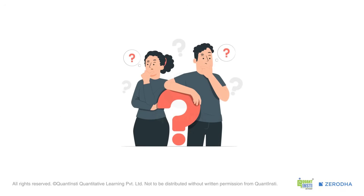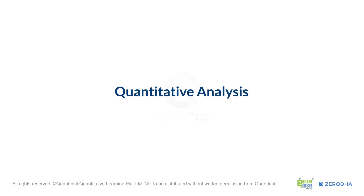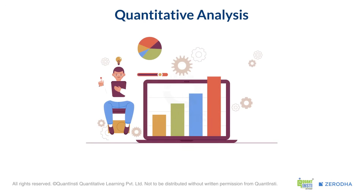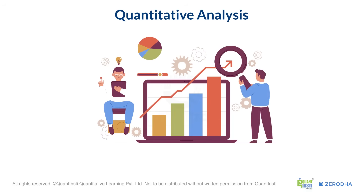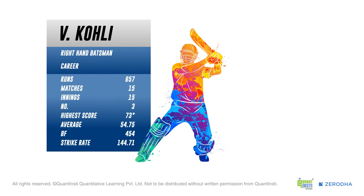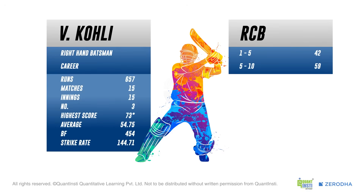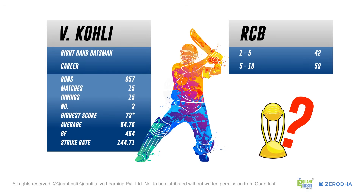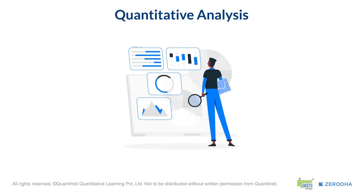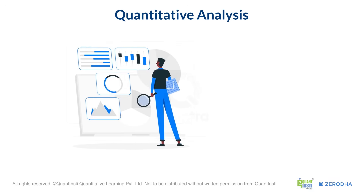But how do we create these strategies? This is where quantitative analysis comes in. It sounds complicated, but the idea is simple — it's about using math and statistics to analyze past market data. Based on our analysis, we predict how the market might move in the future and take trades accordingly. You see it all the time during an IPL match: analysts show Virat Kohli's run rate or how a team scores in the last few overs, using past data to predict who might win. That's data-driven forecasting. Quantitative analysis is the same thing, but for stocks — analyzing historical data to make data-driven trading decisions, taking the emotion out of the equation.